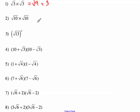The square root of 10 times the square root of 10 is the square root of 10 times 10, which is 100, and the square root of 100 is 10.